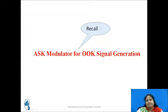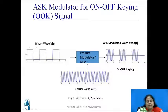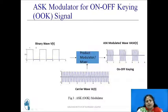Before moving ahead, pause the video and recall the ASK modulator used to generate the OOK signal. The figure shows the product modulator used to generate the OOK signal. To one input, the bit stream in NRZ format is applied and to the other input, a carrier signal is applied, and the output is simply the product of these two signals resulting in an OOK signal output. This same ASK modulator is used to generate the FSK signal.